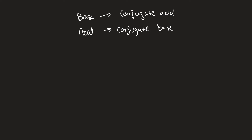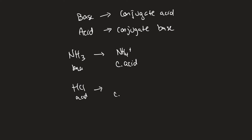This gives us what we call conjugate acid-base pairs. For NH3 (the base), its conjugate acid is NH4+ — because the base gains a hydrogen. For HCl (the acid), its conjugate base is Cl- — because the acid loses a hydrogen and loses a +1 charge, resulting in a negative ion.